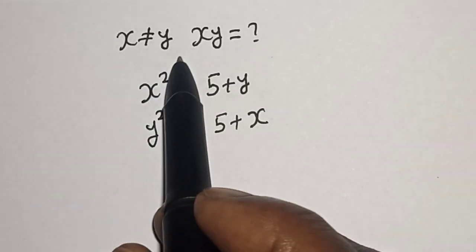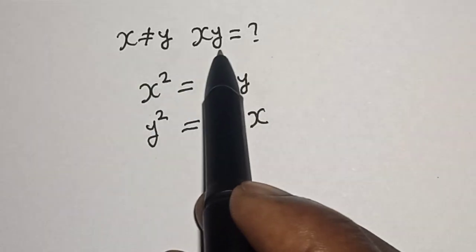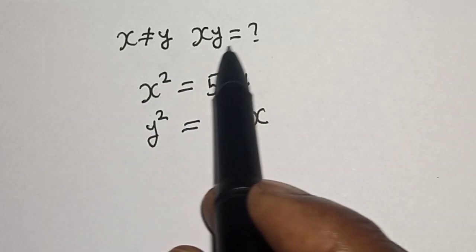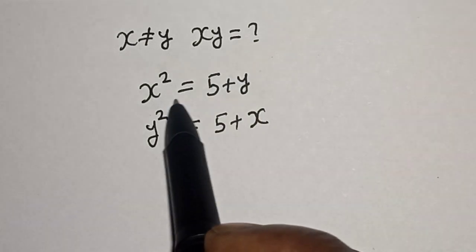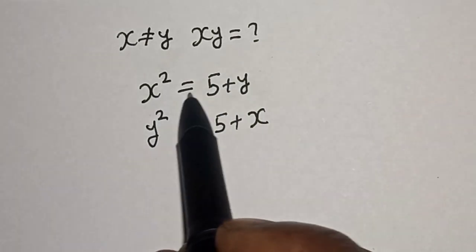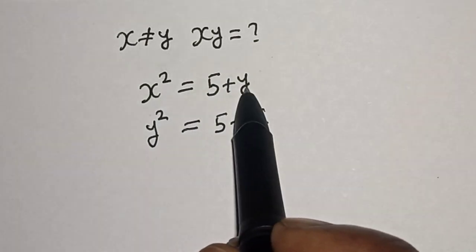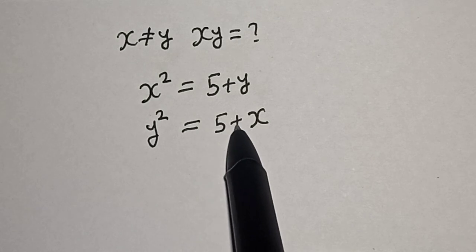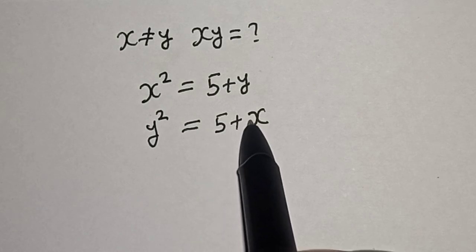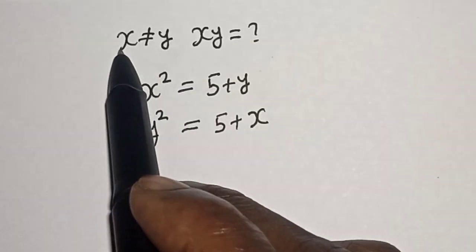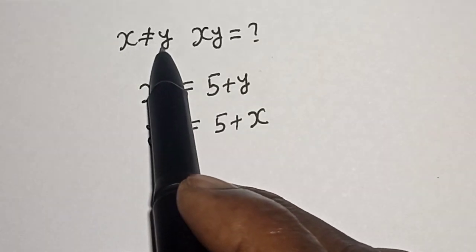Hi everyone, welcome to my class. In this class we want to find the value of sy from this given equation: s square is equal to 5 plus y, and y square is equal to 5 plus x, provided s is not equal to y.